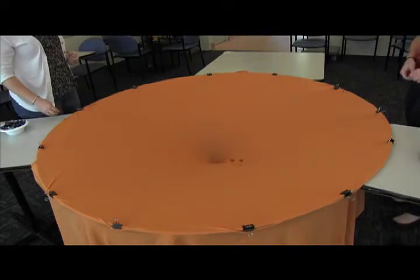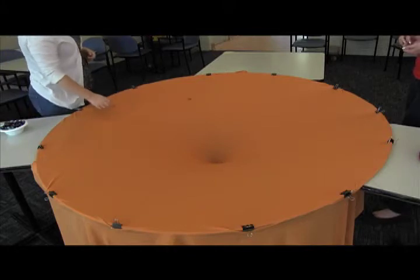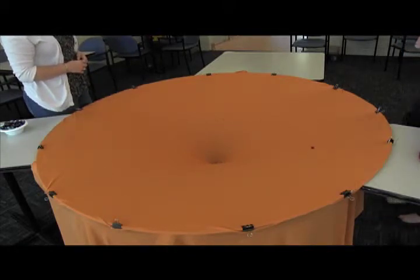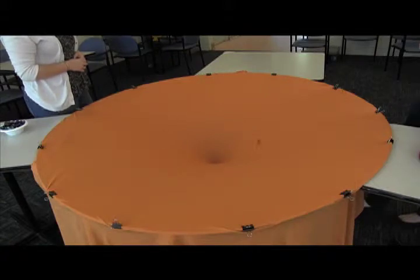For example, roll a marble sideways to achieve a circular or elliptical orbit. Rolling it too hard will cause the marble to fall off the spandex, which is analogous to escape velocity.